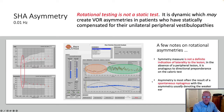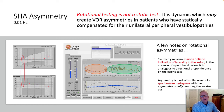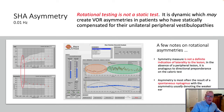Symmetry is not a definitive indication of a right or left weak response. Symmetry in the chair is much comparable or analogous to directional preponderance in caloric irrigations — it represents how well the system beats to the right versus how well the system beats to the left.